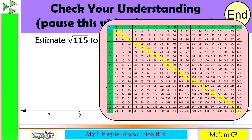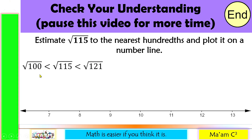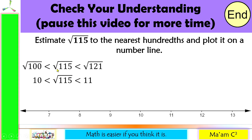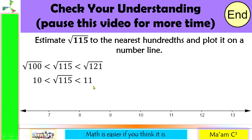Let's have our perfect square table. The square root of 115 is less than the square root of 121 but greater than the square root of 100. The square root of 100 is 10 and the square root of 121 is 11. So square root of 115 is less than 11 but greater than 10. The distance from 115 to 100 is 15 and the distance from 121 to 115 is 6. So 115 is closer to 121 than to 100, meaning square root of 115 is closer to 11 than to 10.